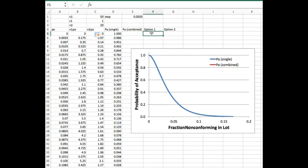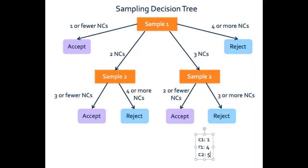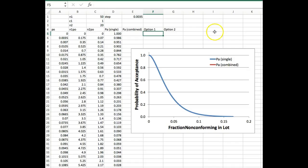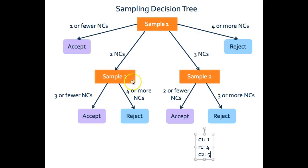To make our combined curve we need to figure out the acceptance options first. Going back to the decision tree, we had two options for our second sample, and we need to reflect that in our probability calculations. This is where your rules of probability come in: if you have an AND case, you multiply your probabilities together; if you have an OR case, you add your probabilities together. In our second sampling, we need to have exactly two nonconforming units in sample one AND three or fewer in sample two — AND means multiply. So we multiply those two things together.